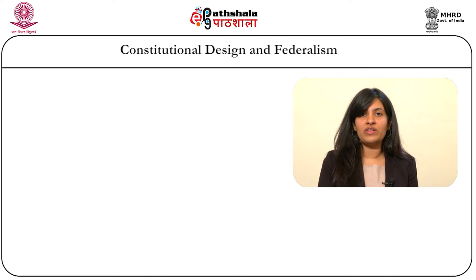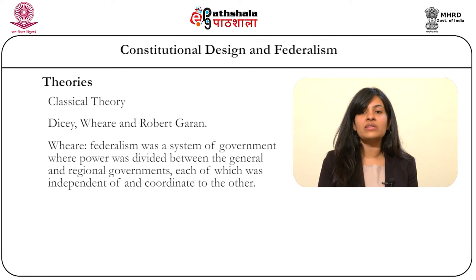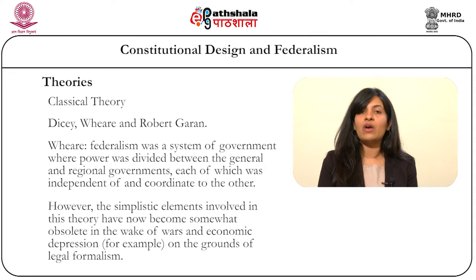Now we move on to the theories of Federalism. Literature and debate relating to Federalism have given rise to three theories. We begin with the classical theory. Proponents of this theory include Dicey, Ware and Robert Guerin. According to Ware, Federalism is a system of government where power was divided between the general and regional governments, each of which was independent of and co-ordinate to the other. However, the simplistic elements involved in this theory have now become somewhat obsolete, especially in the wake of wars and economic depression. The term 'independent' was also heavily criticized, as it is believed that the central and regional governments cannot exist in isolation from each other and there is some degree of mutual dependence involved. More neutral terms like 'autonomy' are better preferred by modern theorists.